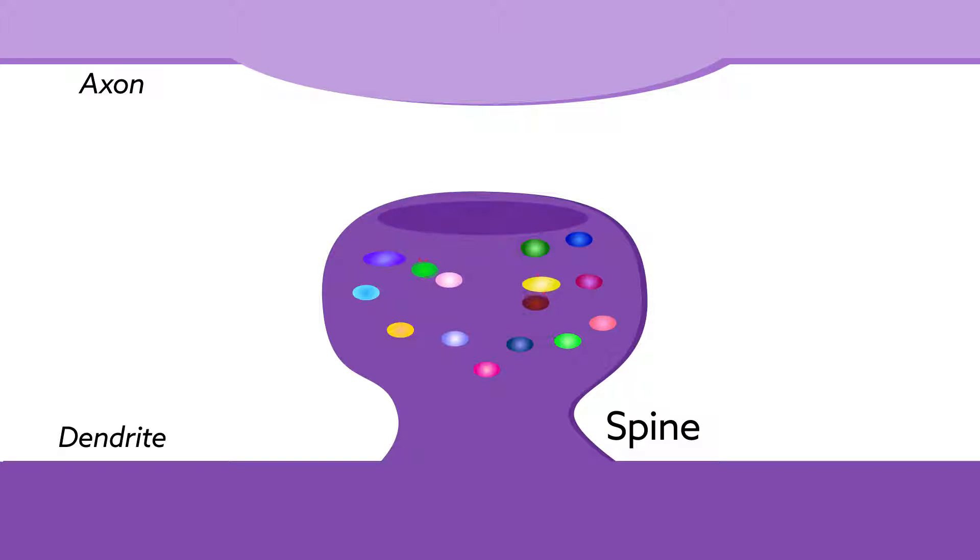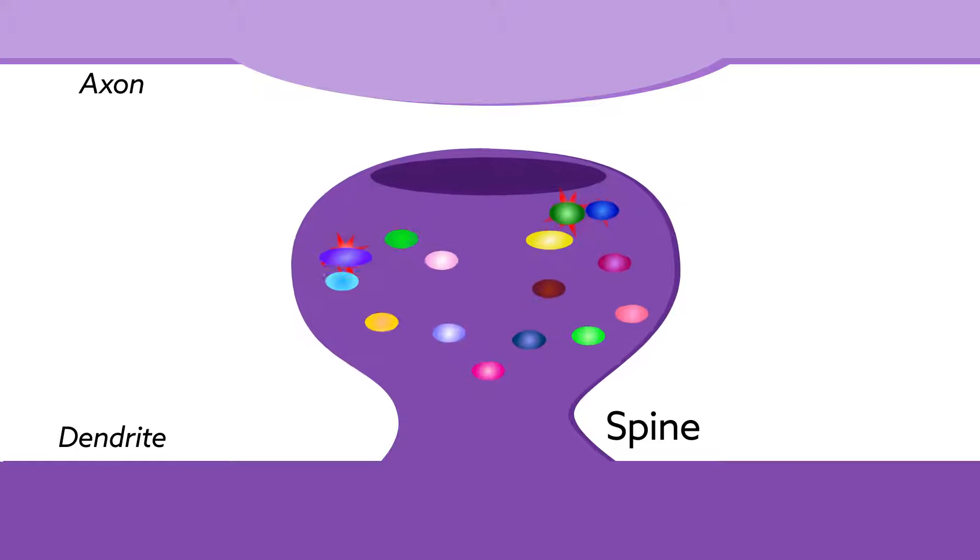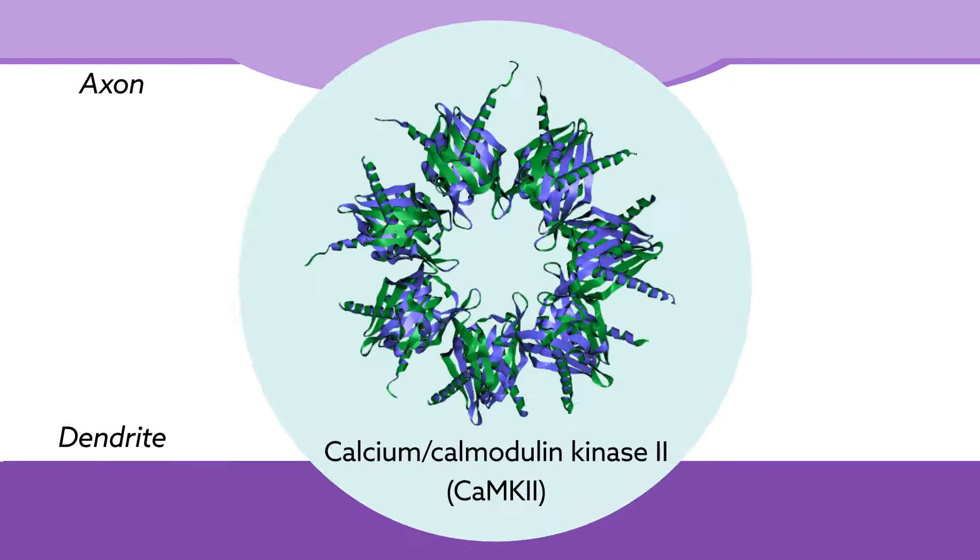These cascades strengthen synapses and make spines grow. The protein calcium-calmodulin kinase 2, or CAMK2, is required for both of these events. But precisely when and how long CAMK2 needs to act was unclear.